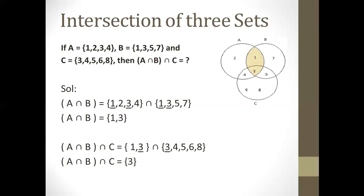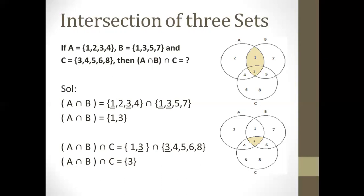For the Venn diagram of A intersection B, the overlapping region of A and B is shaded, containing 1 and 3. Then, taking the intersection of that result with set C, the answer is 3, so only the central region where all three sets overlap is shaded.